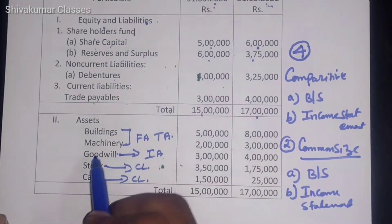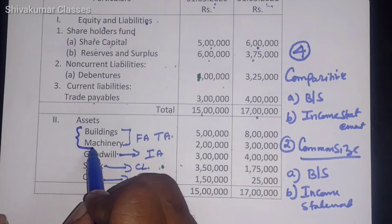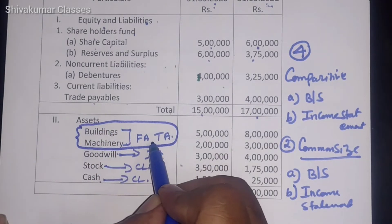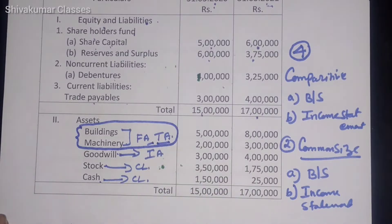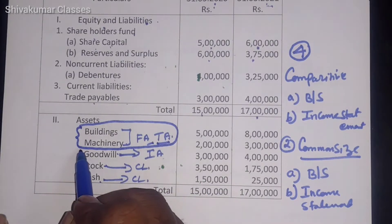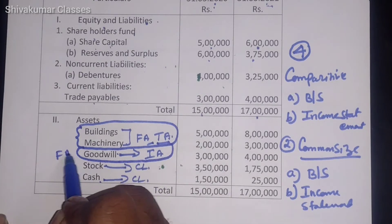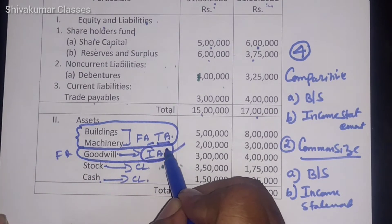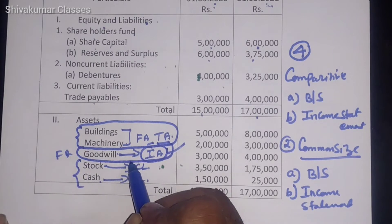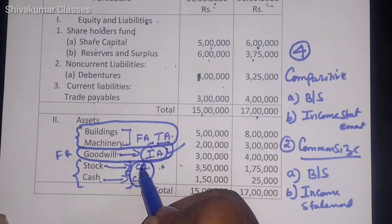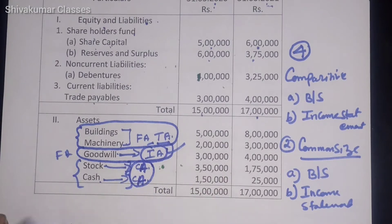Let me separate the assets: Building and Machinery as Fixed Assets — these will appear under Tangible Assets. Goodwill also appears under Fixed Assets but under Intangible Assets. Stock and Cash will appear under Current Assets. This is most important.